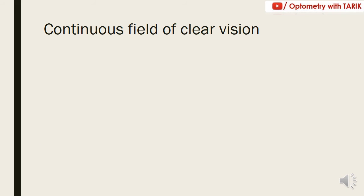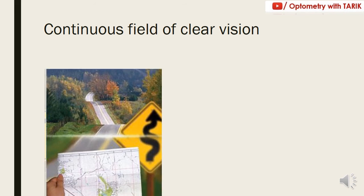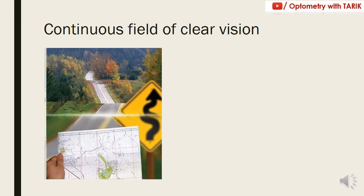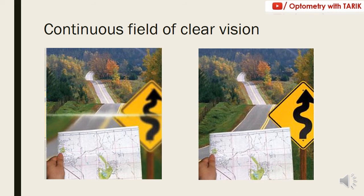The second advantage is a continuous field of clear vision. In bifocal, there is a segment and a sudden change in magnification from distance to the reading area, causing discontinuation of the image with no continuity in the field of vision. The intermediate part is also not clear. In progressive, because there is no particular segment, there is a continuous single field of clear vision with no distortion.